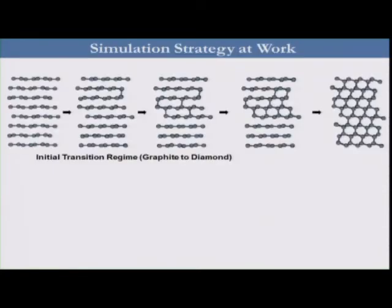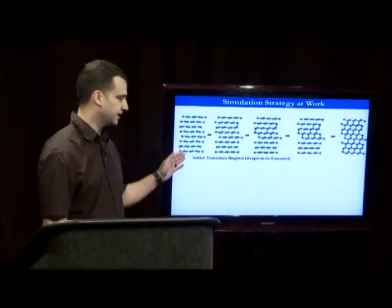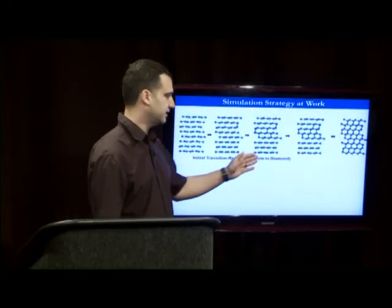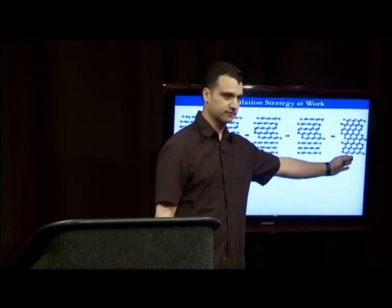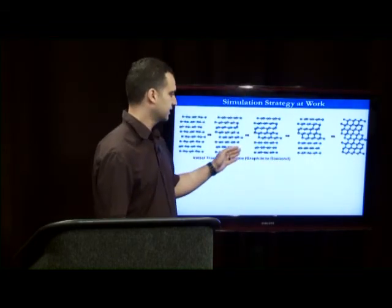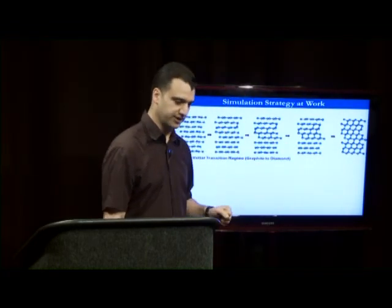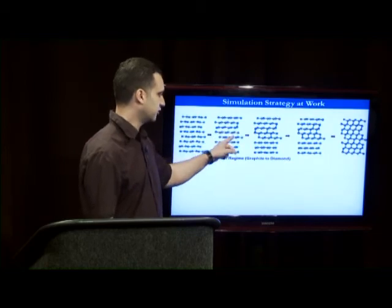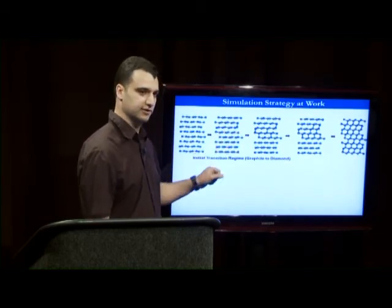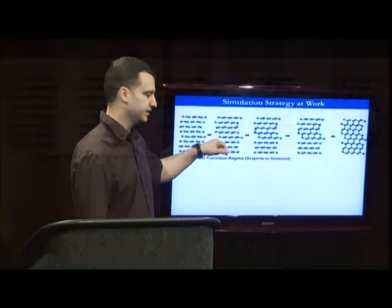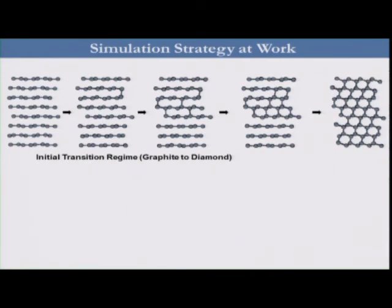Let's see this strategy at work. We have here snapshots from our first transition regime, with graphite on one side and the final product — diamond — on the other, along with the progress of the transition. We can see the formation of first some bonds linking the layers and their propagation into a complete conversion of graphite into diamond.